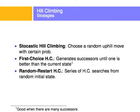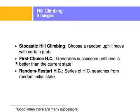Some strategies people have used to alleviate this problem are, for example, stochastic hill climbing, which is basically choosing a random uphill move with a certain probability. You pick the best solution — an uphill move — with a certain probability, but there's a small probability you'll actually pick another random move instead. Then there's another algorithm called first-choice hill climbing, which generates successors until one is better than the current state. Rather than exploring all successors, which might be too many, you generate random successors until one gives a better heuristic than what you have now.